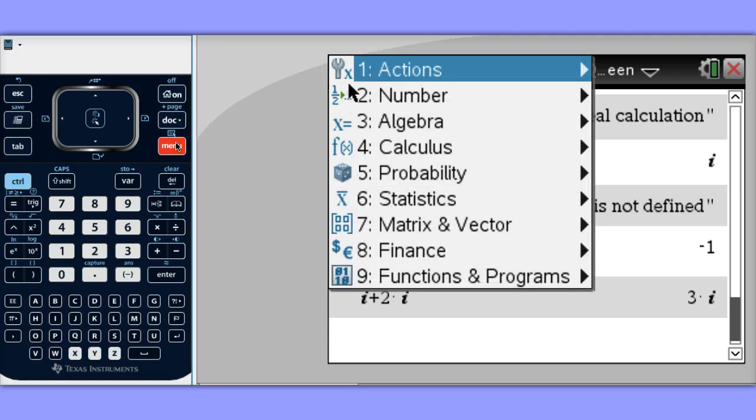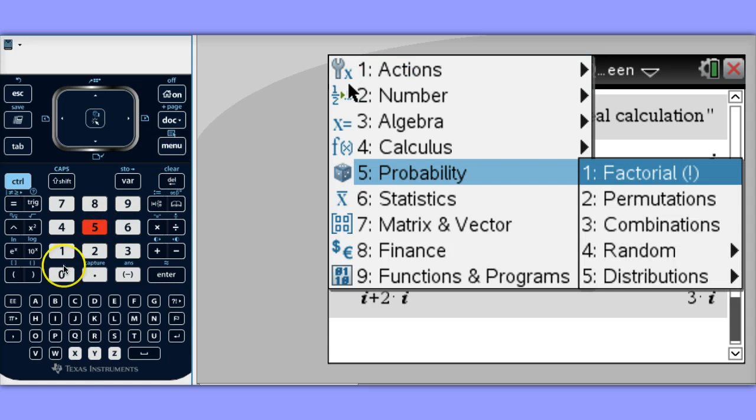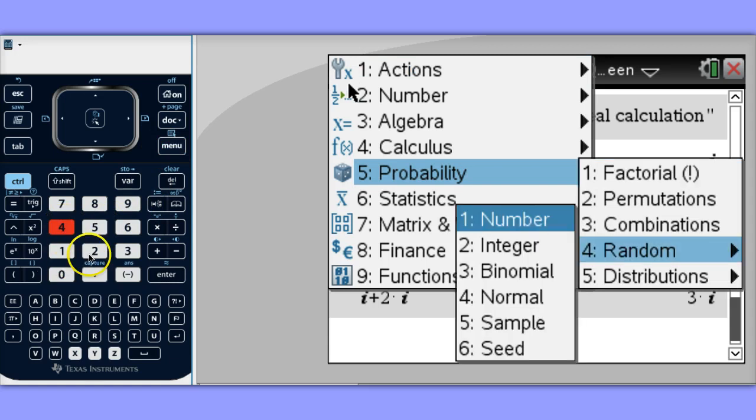To access this from a calculator page, go to menu, choose option 5, probability, option 4, random, and option 2, integer.